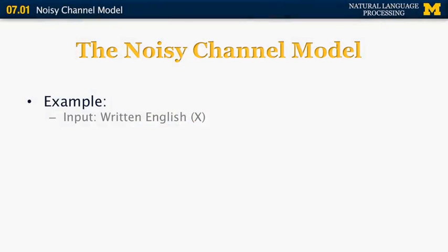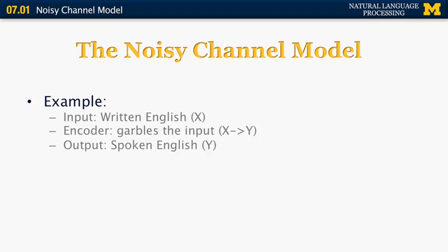Suppose we have a hypothetical system that takes as input written English — let's call that X. Then we have some sort of encoder that randomly garbles the input, converting it to Y, which is some sort of garbled English. The output is what we call spoken English, or Y. This encoder just converts the original sequence of words in English as written into an audio signal that corresponds to spoken English.